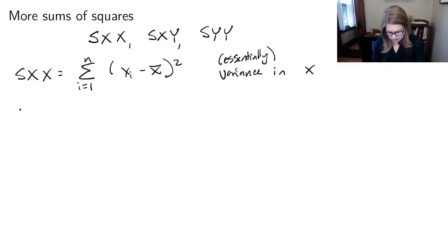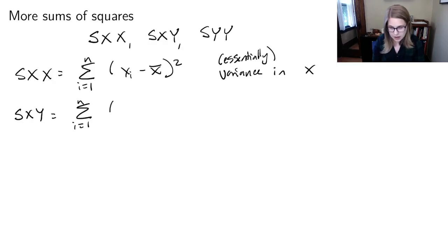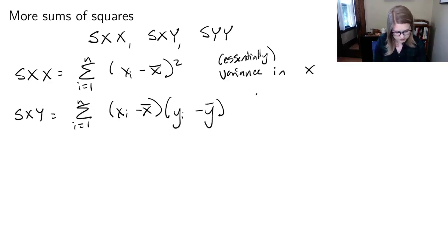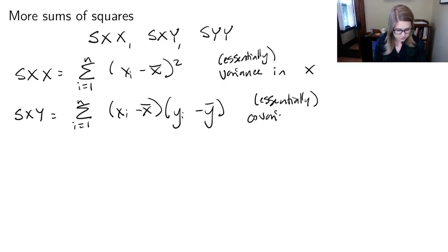S_XY is the sum from i equal one to N of X_i minus X_bar times Y_i minus Y_bar. So there's no squared — this is essentially the covariance of X and Y.